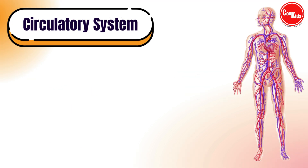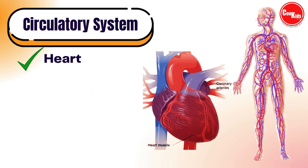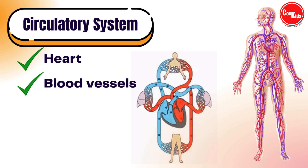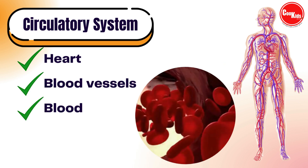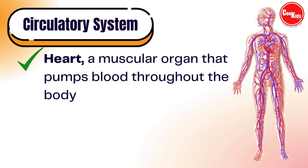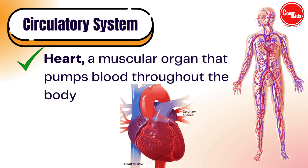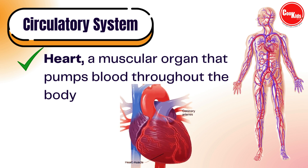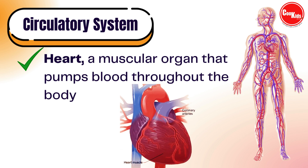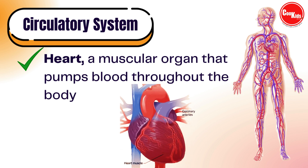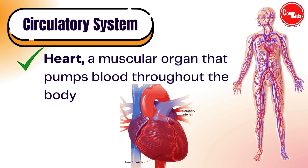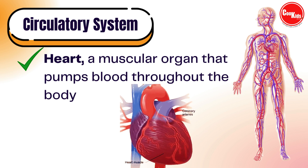The circulatory system consists of the heart, blood vessels, and the blood. The heart is a fist-sized organ that pumps blood throughout our body and is the primary organ of the circulatory system. Our heart contains four main sections and is made of muscle, powered by electric pulses. Our brain and nervous system direct the heart's function.